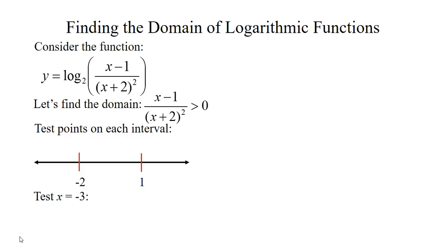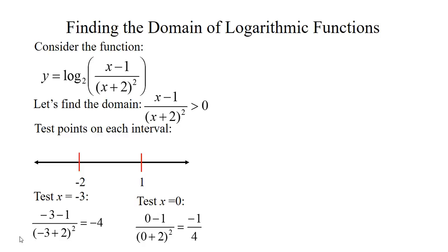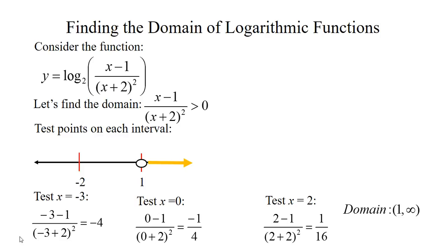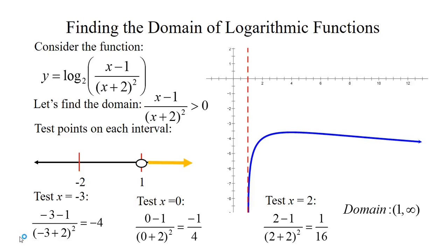Testing a point to the left of negative 2, I tried negative 3, and got a negative, so I will not include this interval as part of my domain. Testing a point between negative 2 and 1, I tested 0 and got negative 1 fourth, so this interval is also not included. Testing a point beyond 1, I chose 2 and got a positive, so I'm including that interval. I'm not including 1 itself because that's where the ratio is 0 and we can't take the log of 0. So the domain is from 1 to infinity, with one vertical asymptote at x equal 1, and the graph is strictly to the right of that line.